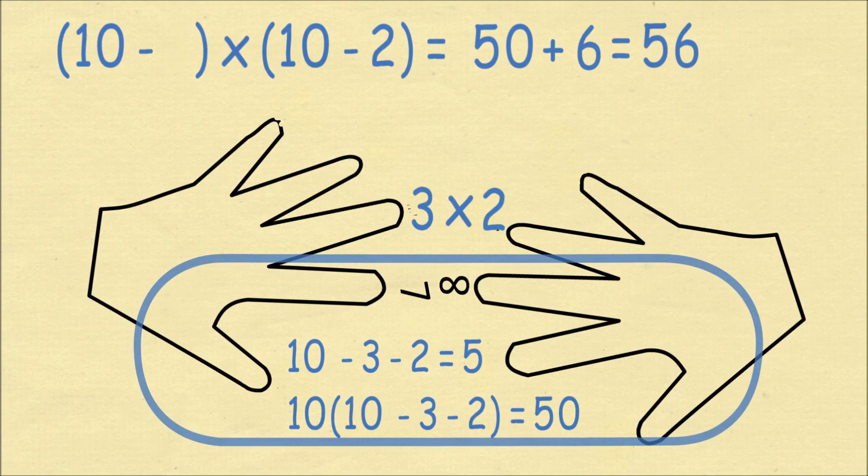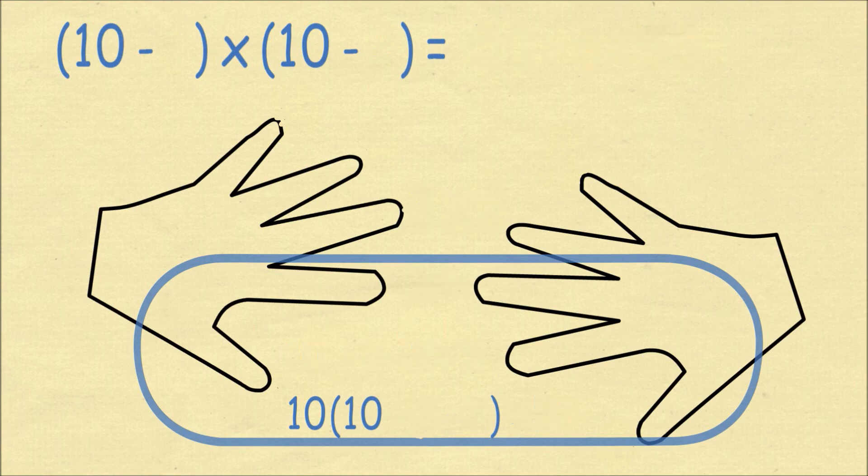Well, think about it algebraically. What we're really doing is we're multiplying 10 minus A times 10 minus B, where A is the number of fingers above the touching fingers or from the pinky, and B is the same quantity on the right hand. The two fingers which we're touching we label as 10 minus A and 10 minus B.